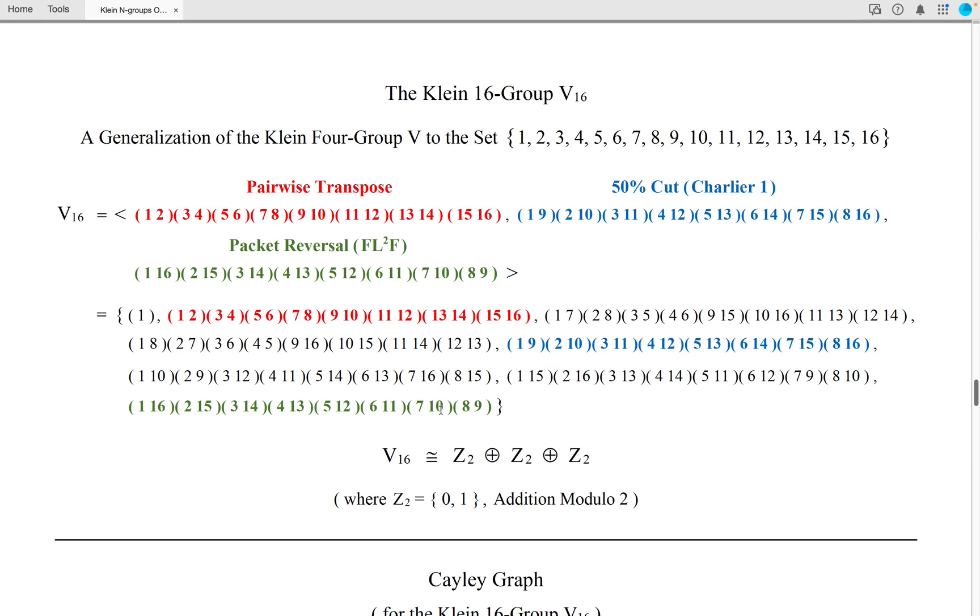We now arrive at the Klein 16 group, which we have not presented yet on the Hidden Structures channel, but it is simply a generalization of the Klein 4 group to a set of 16 elements.